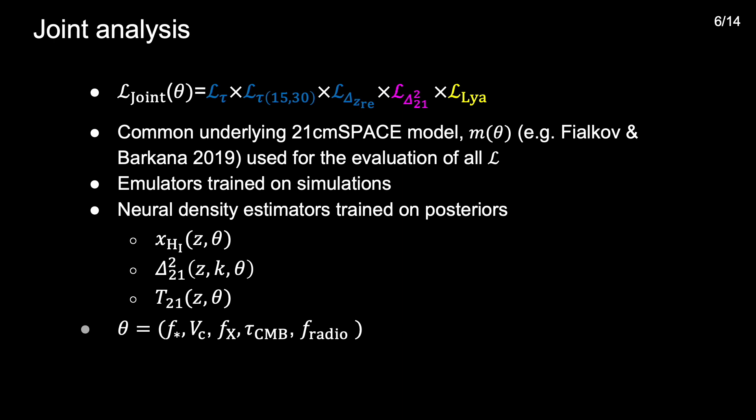Assuming the datasets are independent, the joint likelihood of measuring them is simply the product of their individual likelihood functions. In those likelihoods, we use a common underlying 21cm space model of the universe implemented in simulations by Fialkov, Barkana and collaborators. Ultimately, those simulations are used to derive emulators of the sky-averaged intergalactic medium neutral fraction XHI, the 21cm power spectrum and the global 21cm signal.